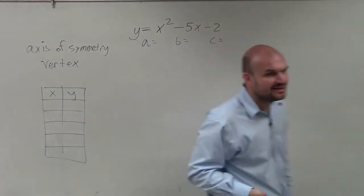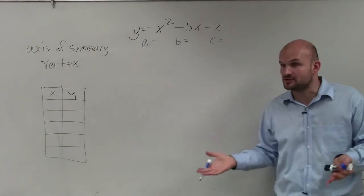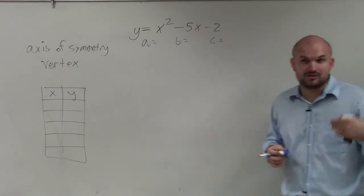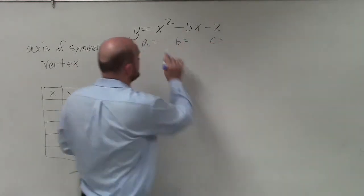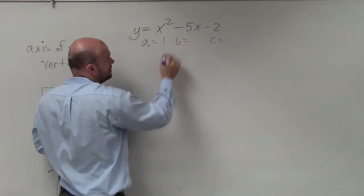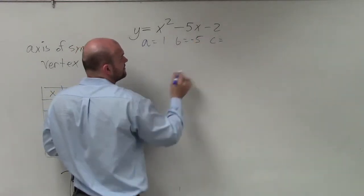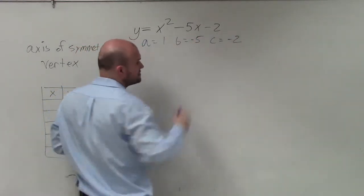It's not a requirement, but I think it's something that's very helpful, especially when you guys are looking into graphing. So the first thing we can do is identify a, which is the coefficient of your quadratic term, which is x squared. So the coefficient there is 1. b is the coefficient of our linear term, x, which is negative 5. And c is our constant, which is negative 2.